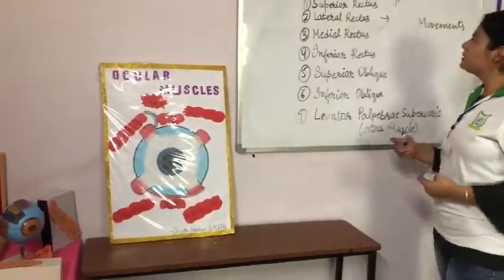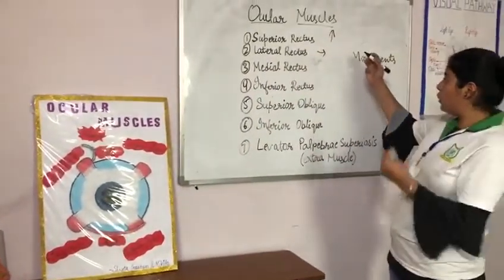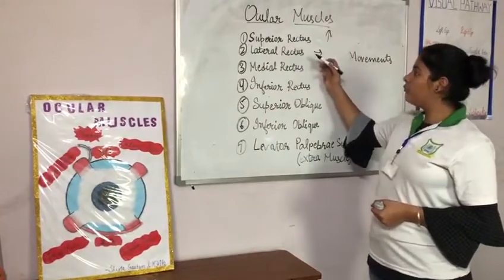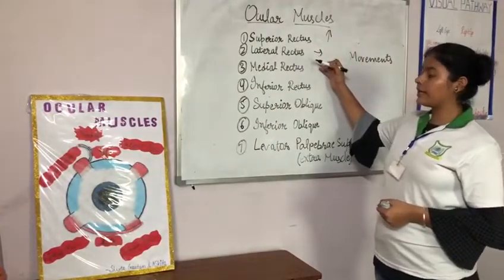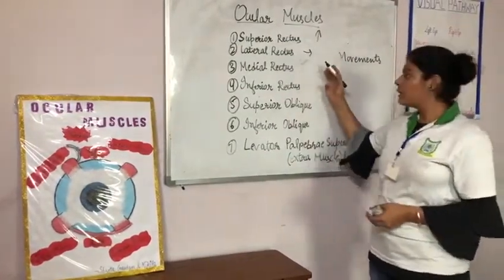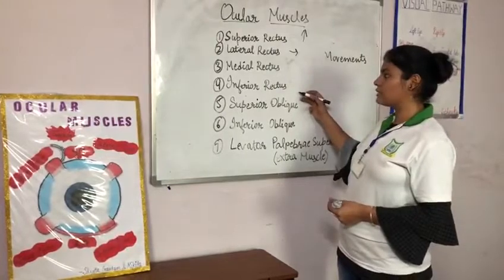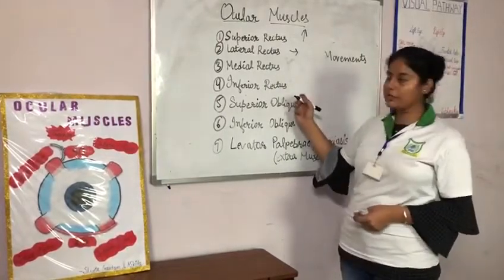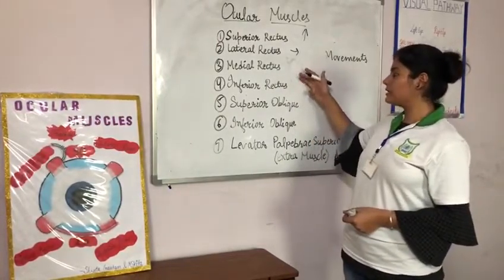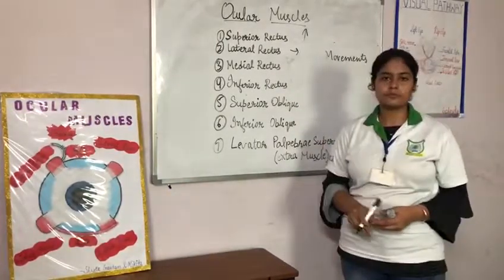The movement of superior rectus is called elevation, and the movement of lateral rectus is called abduction. The movement of inferior rectus is called depression, and the movement of medial rectus is called adduction. Thank you.